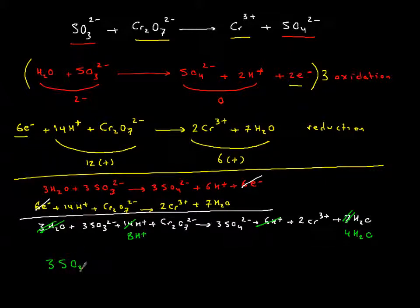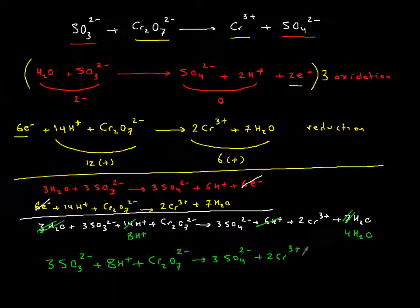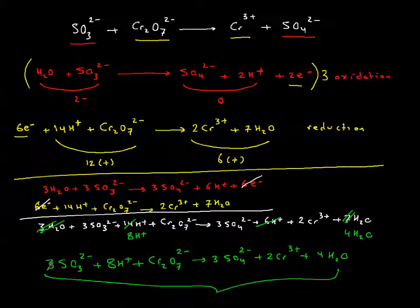On the other side you have 3 sulfate plus 2 chromium plus 4 H2O. And again, if I didn't make any mistake, this is your balanced equation in an acidic environment.